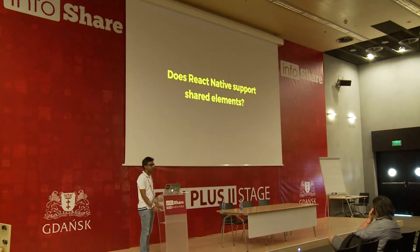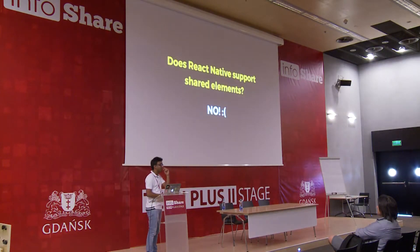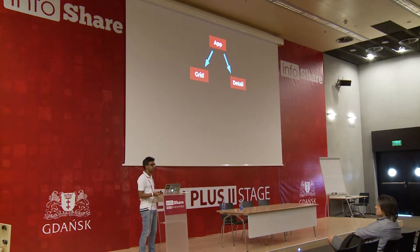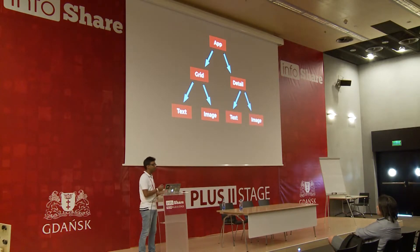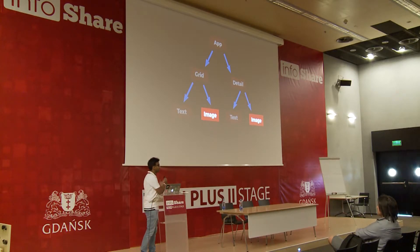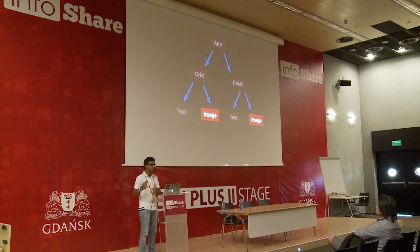Does React Native support shared element? It does not support shared element transition, and React does not support shared elements between routes. To explain why: say you have two routes — grid and detail screen — with a text or image shared between them. There's no way to tell the framework that when moving from one route to another, do not destroy this particular component, reuse the same thing but change it with new props. Instead, it creates a new DOM. Of course there are ways to do it, but as your app gets more complicated, it becomes very difficult.